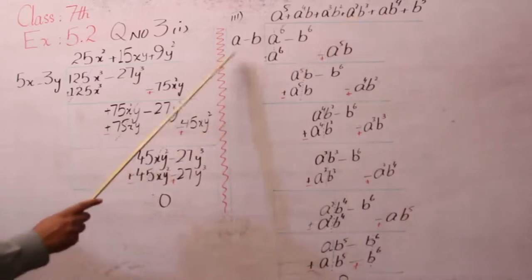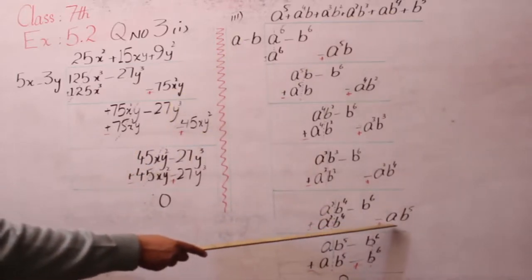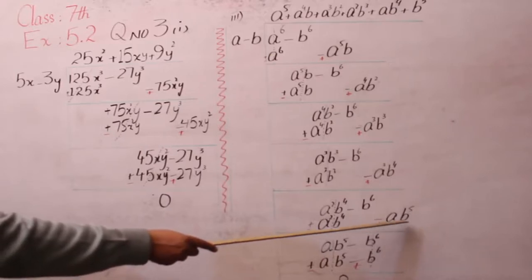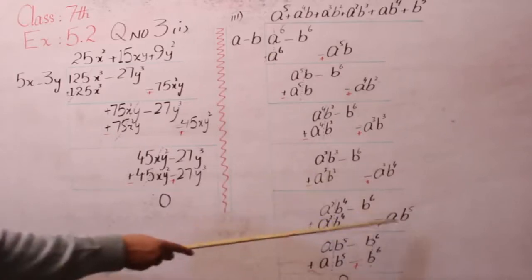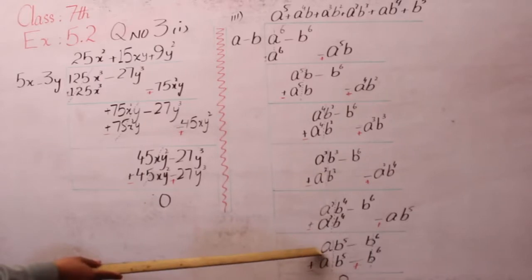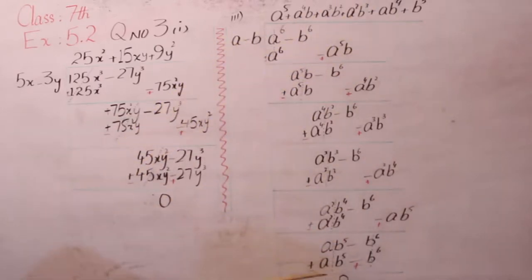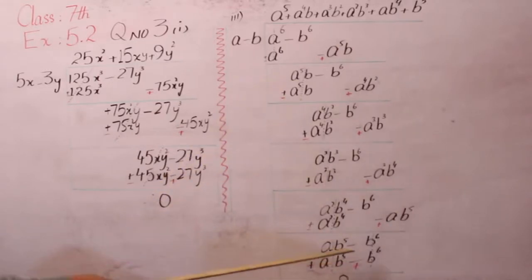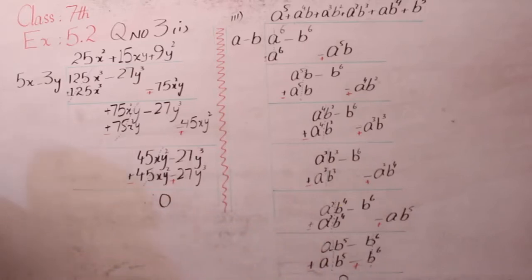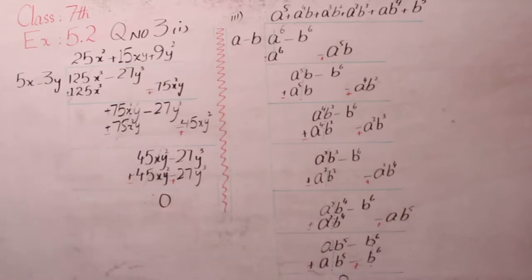अब हमें चाहिए a की 2 और b की 4 — तो a और b की 4 से multiply करेंगे और a की 2 और b की 4 बन जाएगा। b से multiply करने के बाद ab की 5 — sign change हुए, यह value यहां पर आगे। अब हमें ab की 5 चाहिए, तो b की 5 से multiply करेंगे — b की 5 और minus b की 6 — value cut हो जाएगी।